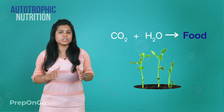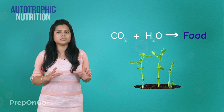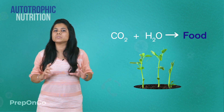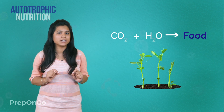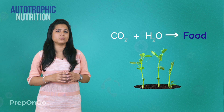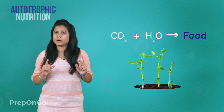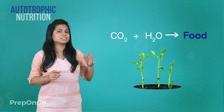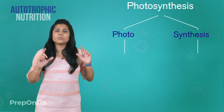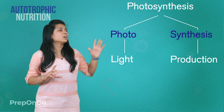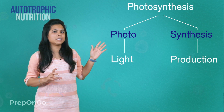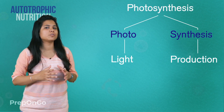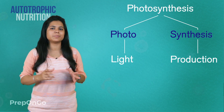In autotrophic nutrition, plants use carbon dioxide and water from the surroundings in the presence of sunlight to make their own food. This process is called photosynthesis. The word simply means: 'photo' means light and 'synthesis' means production. So it is the synthesis of food by green plants in the presence of sunlight.